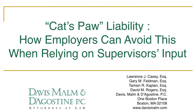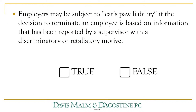There's something called cat's paw liability, and I'll explain to you how that term was derived in a minute. Employers may be subject to cat's paw liability if the decision to terminate an employee is based on information — even true information — that has been reported by a supervisor with a discriminatory or retaliatory motive.